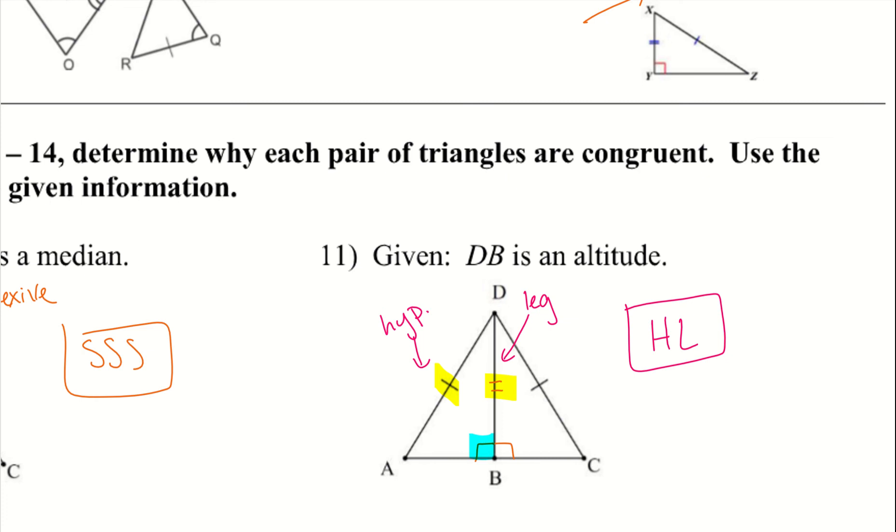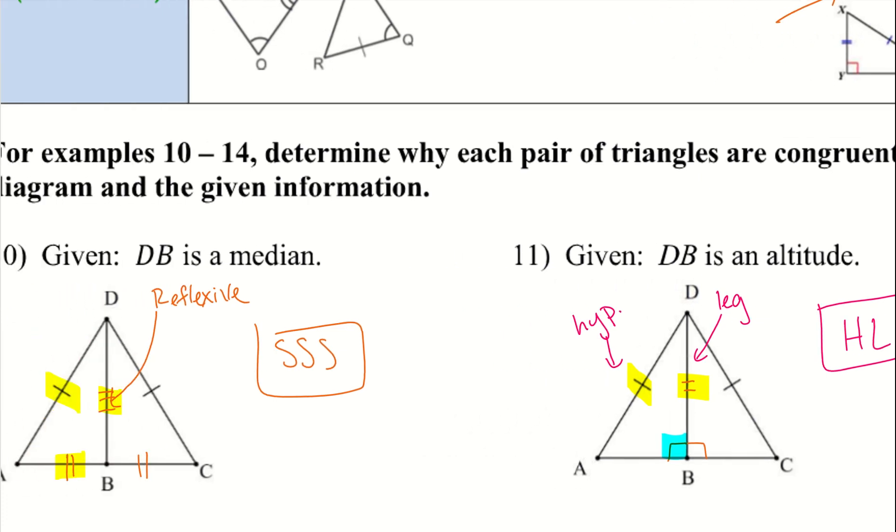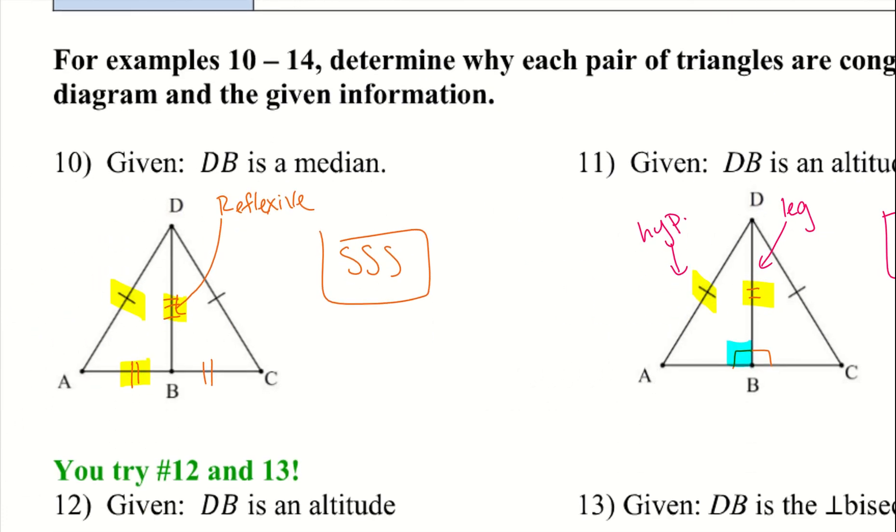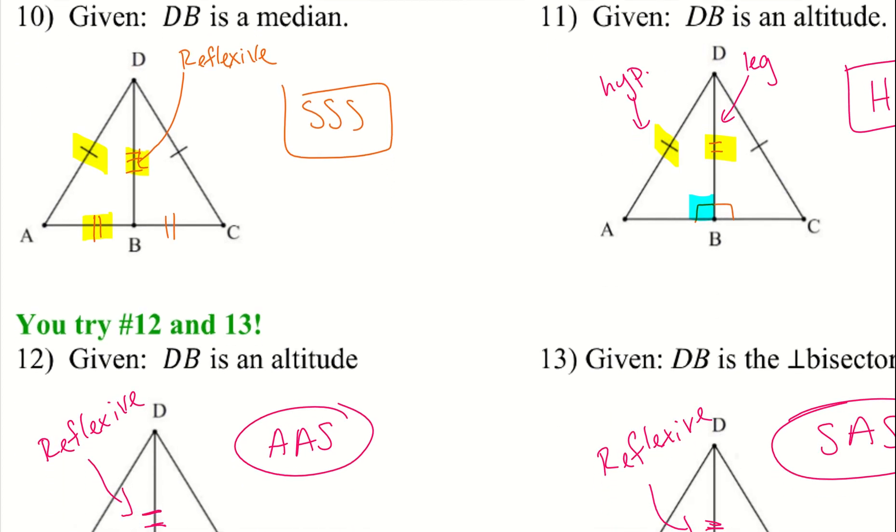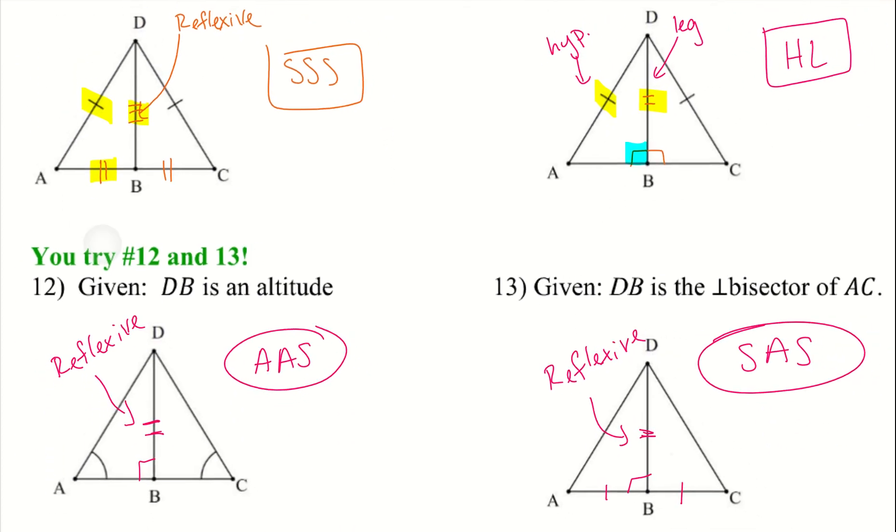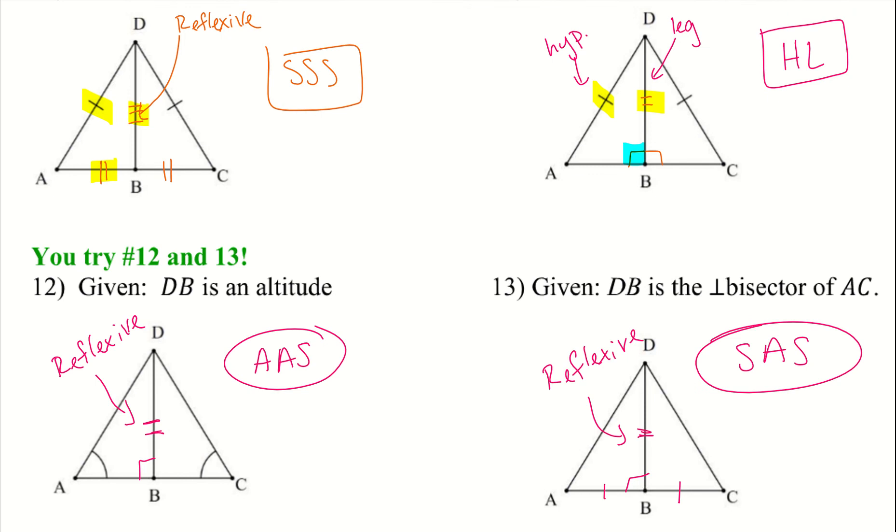Go ahead and try 12 and 13, those ones are you-tries. Here is 12 and 13. Once again we use the reflexive property in both of these in order to create my answers. And then as a reminder for 13, DB is a perpendicular bisector, so it created that 90 degree angle and then cut my bottom part of my triangle in half.